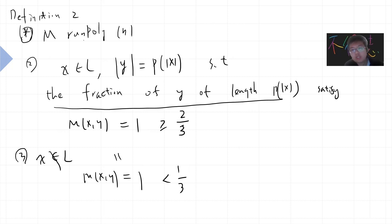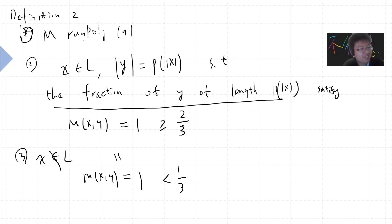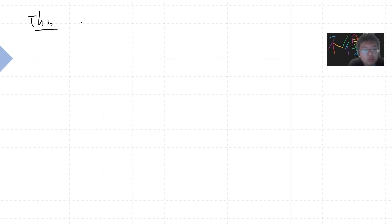So this is a two-sided probabilistic class. Before we keep going, let me quickly prove something. The theorem — which is not difficult to prove — is that BPP is in EXP.